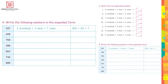Write the following numbers in expanded form. 347: in words, 300 plus 4 tens plus 7 ones; in numbers, 300 plus 40 plus 7. Four hundred and eight: four hundreds plus zero tens plus eight ones, which equals 400 plus zero plus 8.